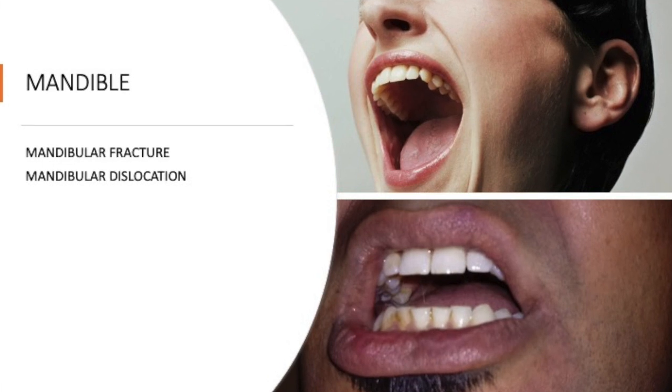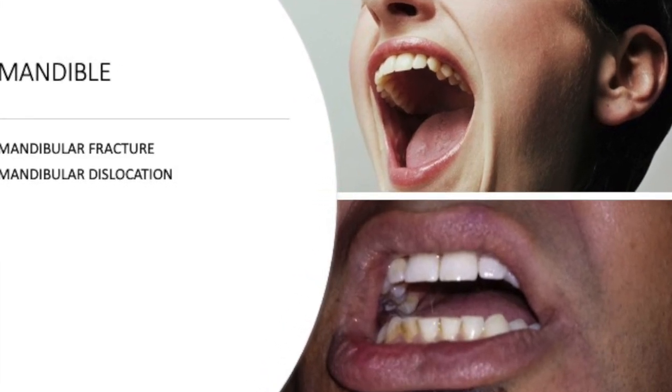Take a moment to think about the answer. You can check your answer with the previous video about jaw swellings. Now let us begin with two conditions affecting the mandible — one in which the patient is unable to open the mouth, and another in which an open mouth cannot be closed. We are going to talk about mandibular fractures and TMJ dislocations.